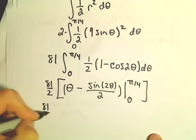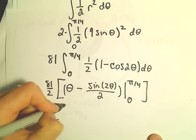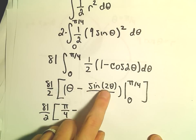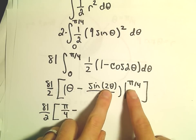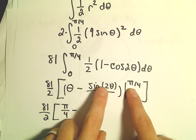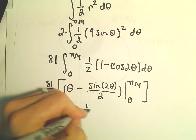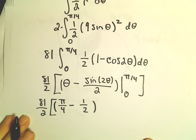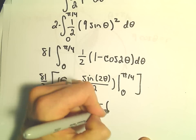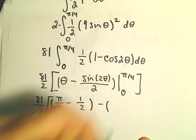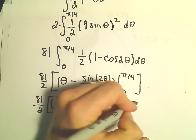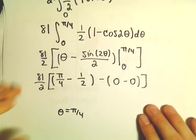So it looks like we've got 81 over 2. We'll plug in pi over 4 minus sine of 2 times pi over 4. 2 times pi over 4 is going to be pi over 2. Sine of pi over 2 is going to be 1. So we'll have pi over 4 minus 1 half as our upper limit of integration. Minus, we'll just plug in 0. We'll get a 0. Sine of 0 is also 0.